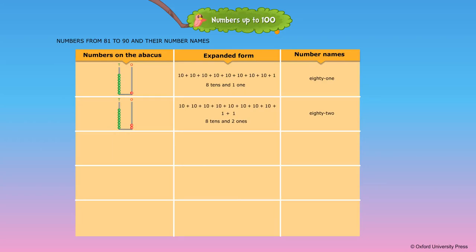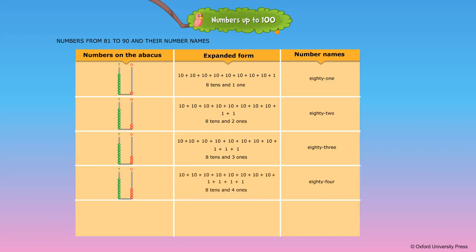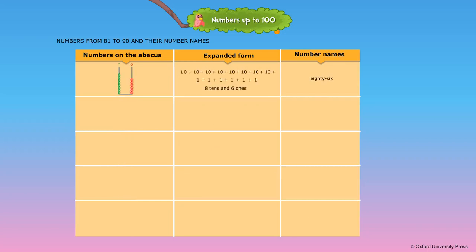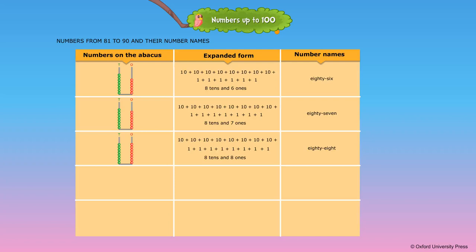8 tens and 3 ones — the number name is written as 83. 8 tens and 4 ones — the number name is written as 84. 8 tens and 5 ones — the number name is written as 85. 8 tens and 6 ones — the number name is written as 86. 8 tens and 7 ones — the number name is written as 87. 8 tens and 8 ones — the number name is written as 88. 8 tens and 9 ones — the number name is written as 89.